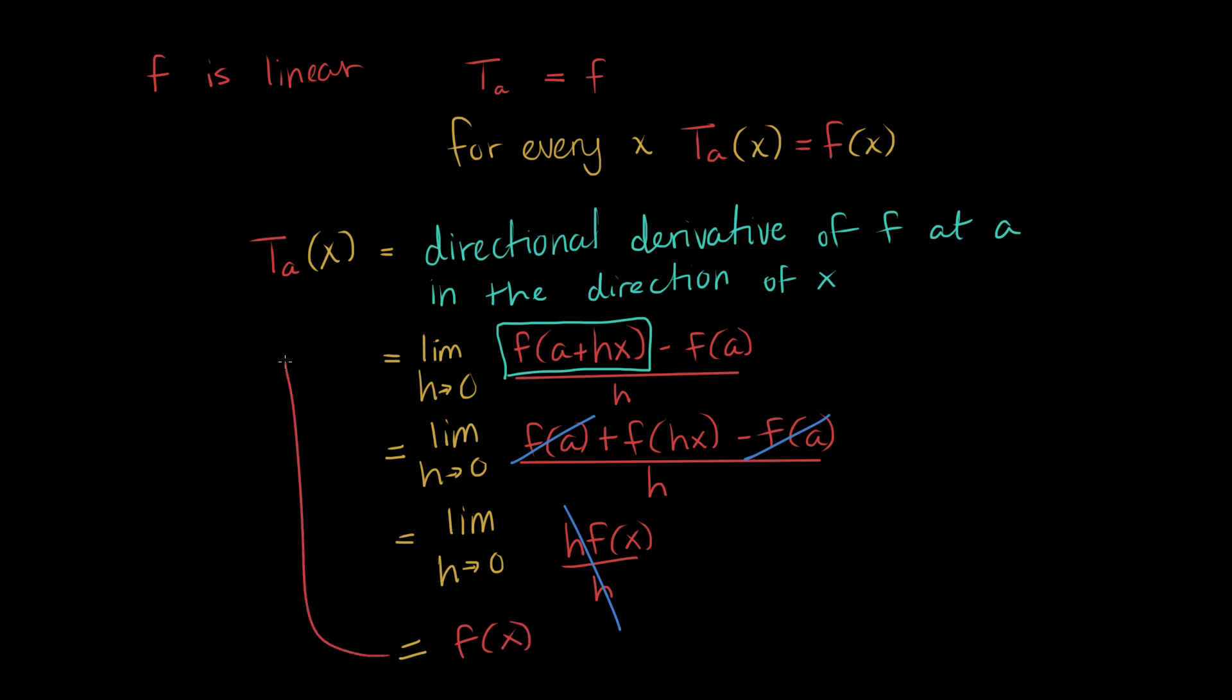And so, if we come back up here, we notice that we've just shown that the total derivative at a times x, or evaluated at x, I should say, is equal to F of x. There was no assumption on what kind of input x we were using, so, we've shown that this is true for all x, and, therefore, we have successfully shown that this fact is indeed true, that it is just equivalent.